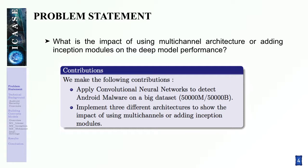More specifically, we make the following contributions. First, we apply convolutional neural networks to detect Android malware on a big dataset composed of 50,000 malware and 50,000 benign applications. Second, we implement three different architectures to show the impact of using multi-channel or adding inception modules on the model performance.